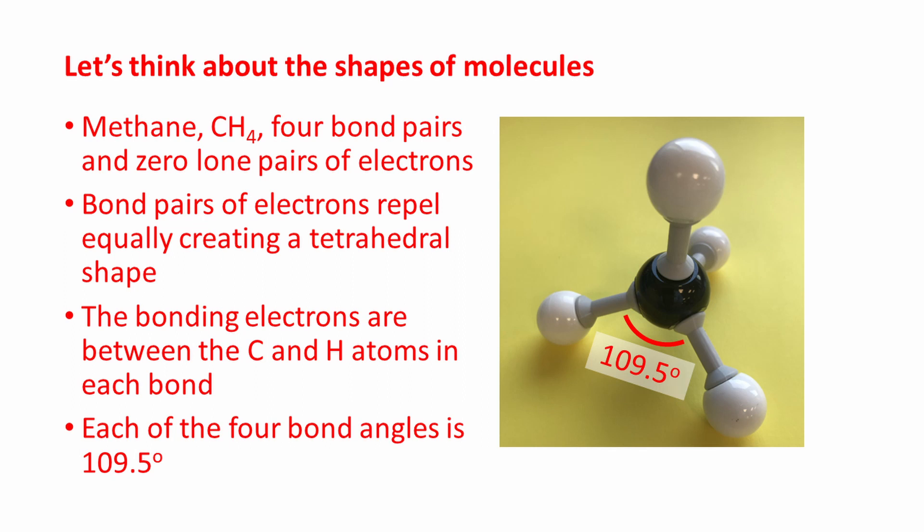Let's think about the shapes of molecules. Methane, CH4, has four bond pairs of electrons and zero lone pairs of electrons around the central carbon atom. Bond pairs of electrons repel equally, creating a tetrahedral shape. The bonding electrons are between the carbon and hydrogen atoms in each bond. Each of the four bond angles is 109.5 degrees.